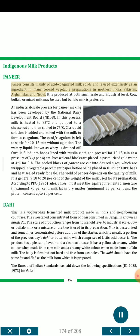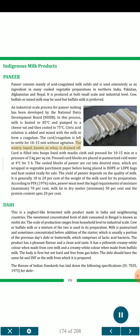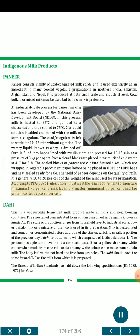Indigenous milk products — Paneer: paneer consists mainly of acid-coagulated milk solids and is used extensively as an ingredient in many cooked vegetable preparations in northern India, Pakistan, Afghanistan and Nepal. Cow, buffalo or mixed milk may be used, but buffalo milk is preferred. An industrial scale process for paneer making has been developed by the National Dairy Development Board. Milk is heated to 85 degrees Celsius, pumped to a cheese vat, then cooled to 75 degrees Celsius. Citric acid solution is added and mixed with the milk to form a coagulum. The curd coagulum is left to settle for 10 to 15 minutes without agitation and the whey is drained off. Curd is filled into hoops lined with muslin cloth and pressed for 10 to 15 minutes at a pressure of 3 kg per sq. cm. Pressed curd blocks are placed in pasteurized cold water at 4 degrees Celsius for 3 hours. The cool blocks of paneer are cut into desired sizes, wrapped in vegetable parchment paper, placed in HDPE or LDPE bags and heat sealed ready for sale. The yield of paneer is generally 18 to 20 percent of the weight of milk. According to PFA rules, paneer must meet legal requirements of moisture maximum 70%, milk fat in dry matter minimum 50%, and protein content up to 20%.